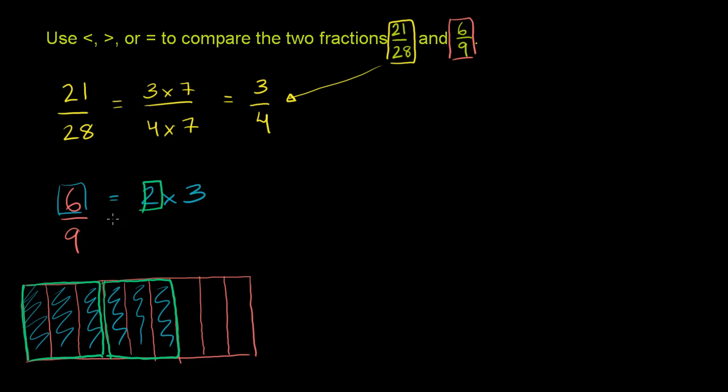So you could view it as, let me do it this way. You could view it as 2 groups of 3. So this is 1 group of 3. This is 1 group of 3 right there. And that is another group of 3. These are 2 groups of 3. Now, what is 9 equivalent to? 9 is equivalent to 3 times 3, or 3 groups of 3.